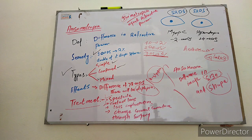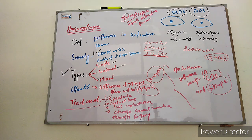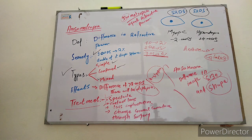What are iseiconics glasses? If there is a difference in the size and shape of the image of the two eyes, this is called aniseikonia. As already mentioned, a difference of one diopter sphere causes a two percent difference in image size. For the treatment of aniseikonia in anisometropia, there are special glasses called iseiconics glasses. We can treat anisometropia with the help of these special iseiconics glasses. Thank you so much.